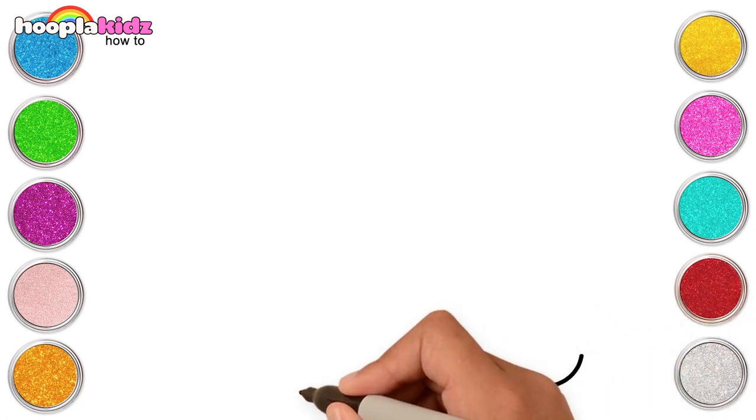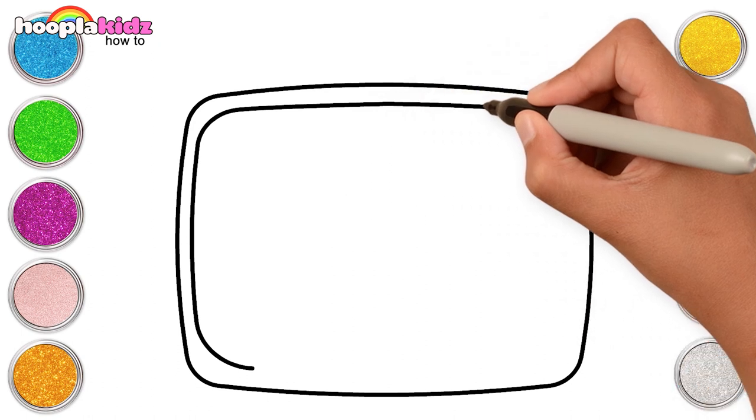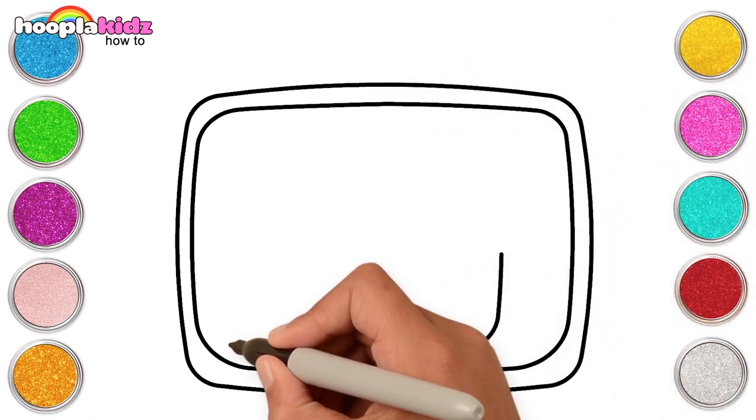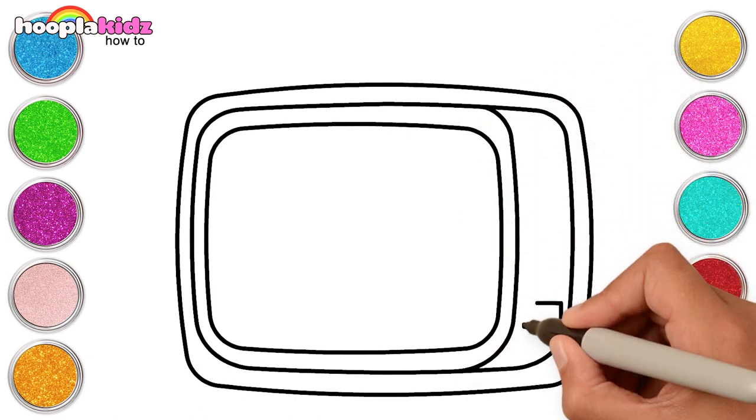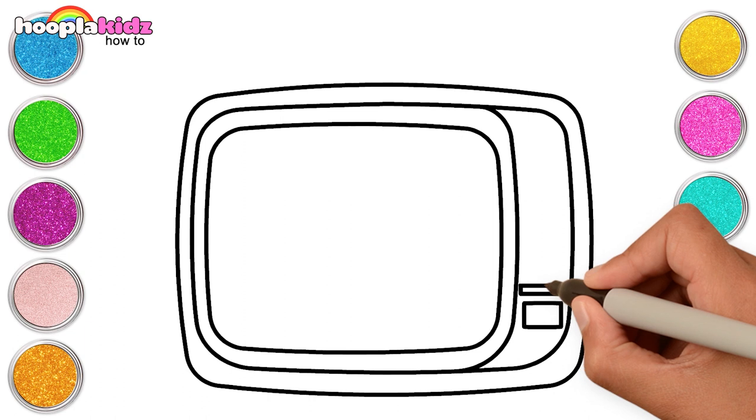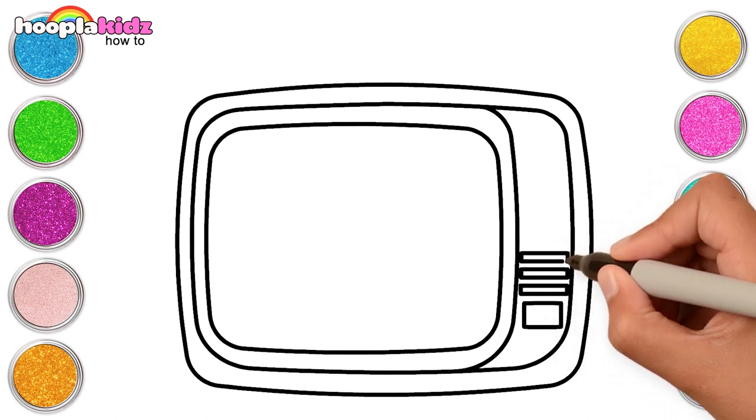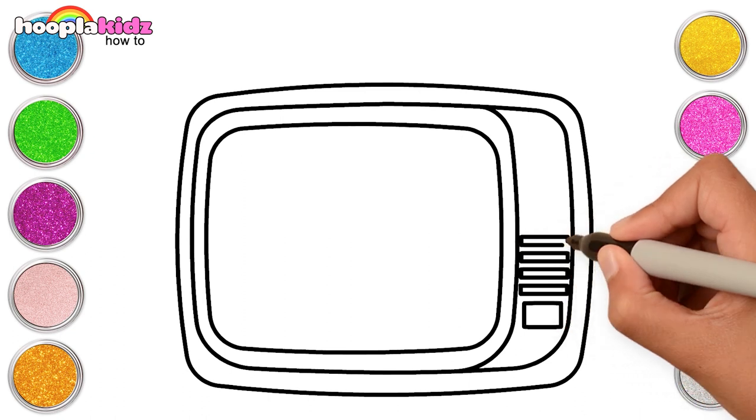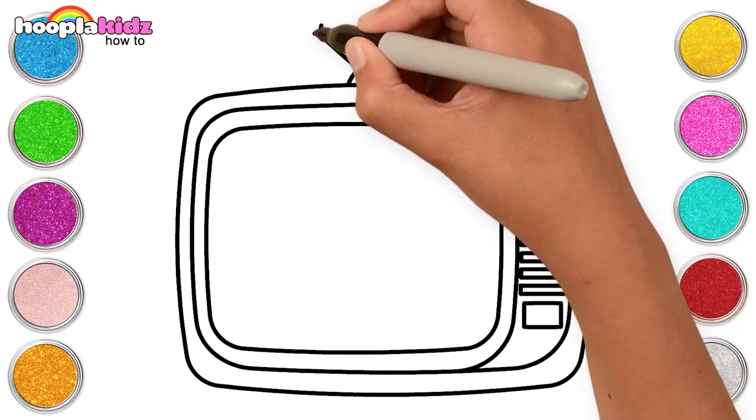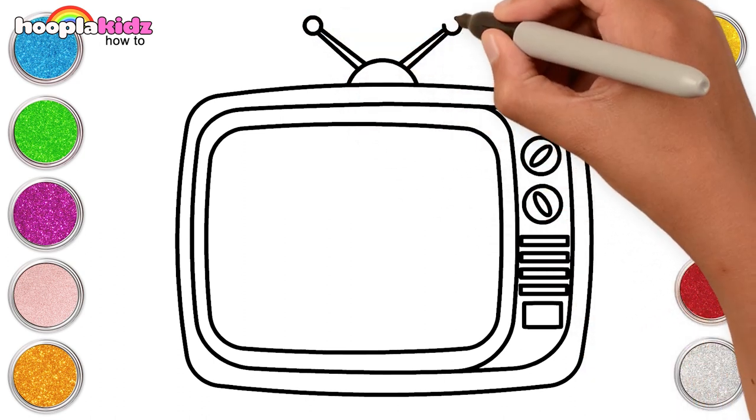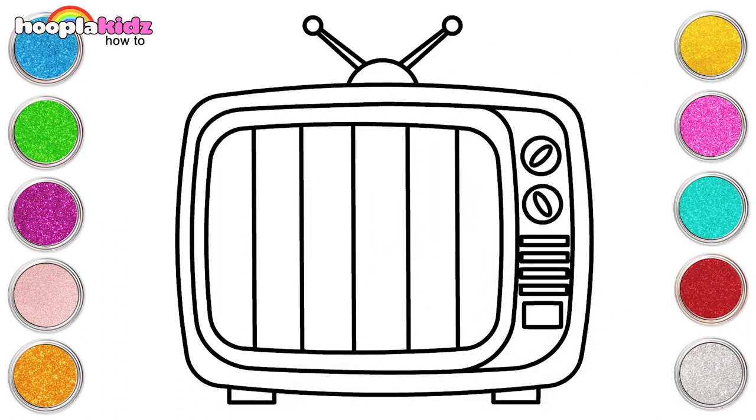Hi kids! Let's make our very own television set. Let's begin with making rectangles inside each other. Our TV needs buttons, doesn't it? Let's make them! We need to make an antenna for our TV. We need a picture on the TV too. Well, our sketch is ready! Let's color!